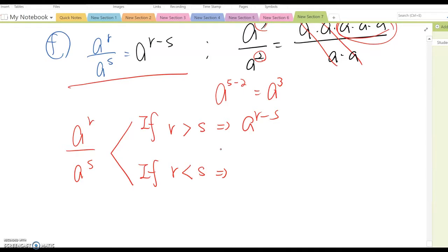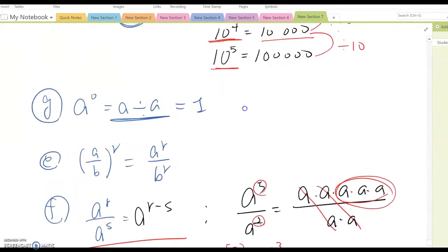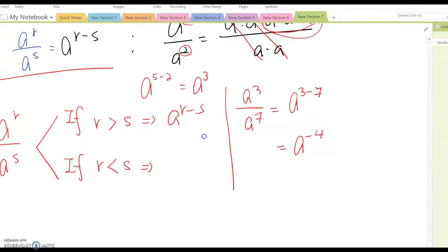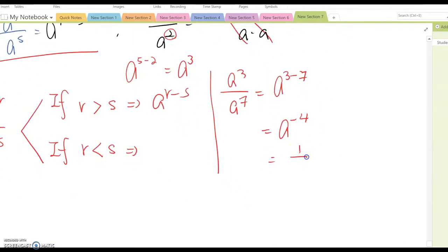I am going to show the example first. A cubed over A seven here. Then, as you see, this becomes A to the three minus seven here. So, it becomes A to the negative four. Using property D, then you will rewrite this one over A to the fourth power.